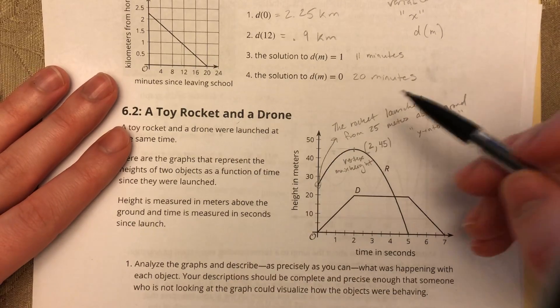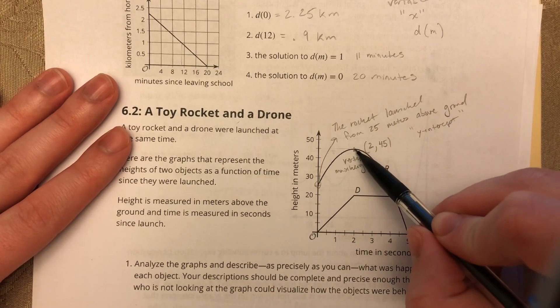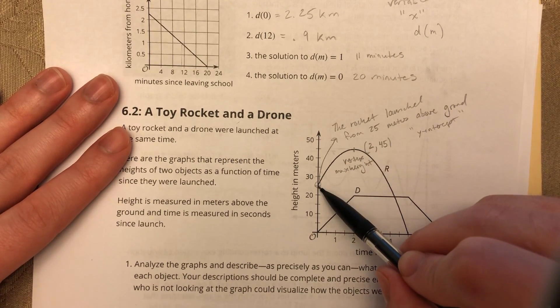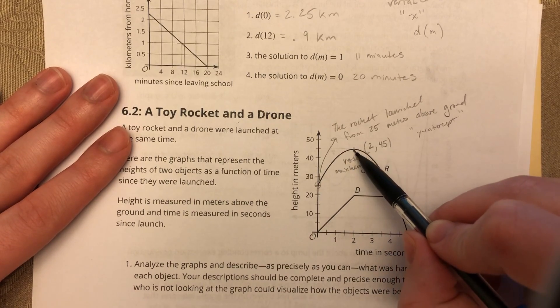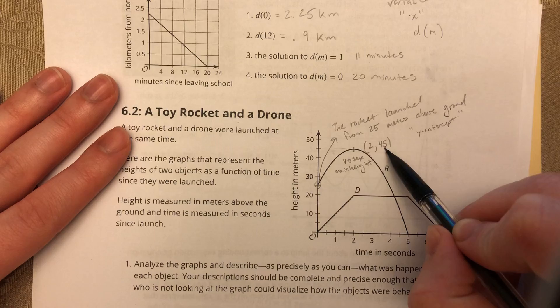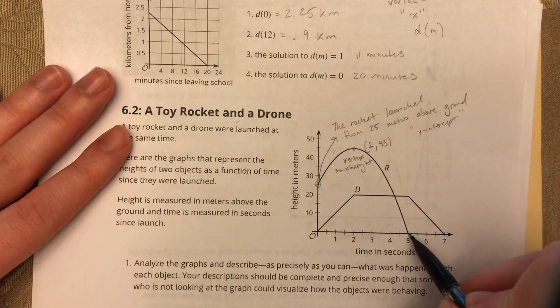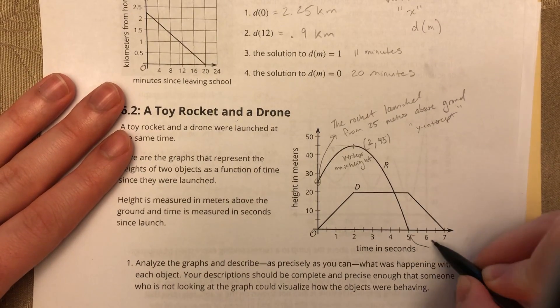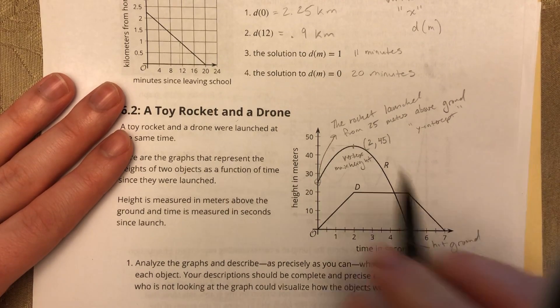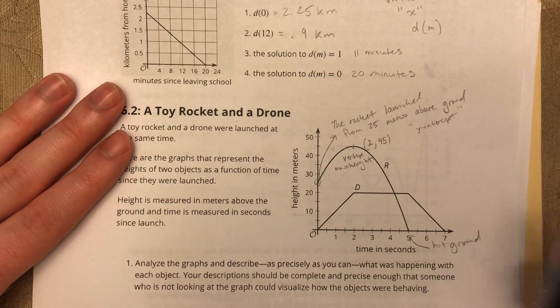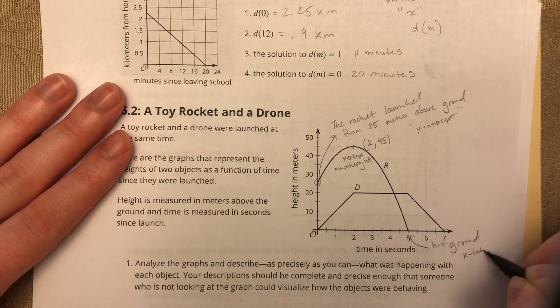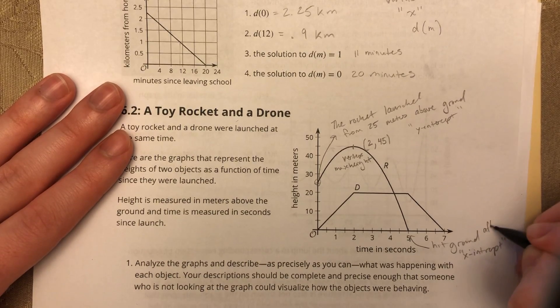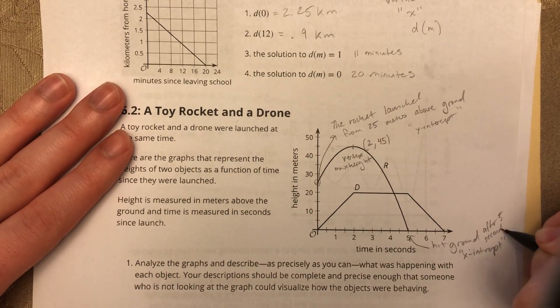So that's another very important part of the rocket. So it was launched from 25 feet. After two seconds, it reached its max height of 45 meters. Sorry, I keep on saying feet. Its initial height was 25 meters. After two seconds, it reached its maximum height of 45 meters. And then three seconds later, or five seconds from the beginning of the launch, it hit the ground. It hit ground. And just like this is considered the y-intercept, when we hit the x-axis, we call that the x-intercept. Hit ground after five seconds.